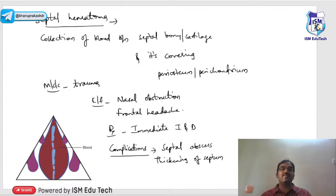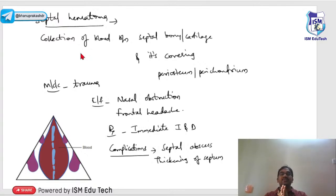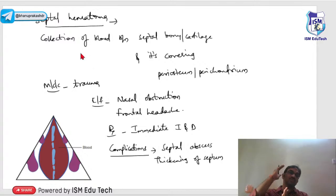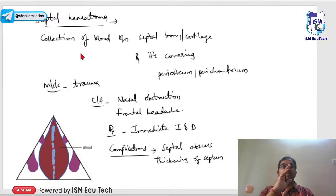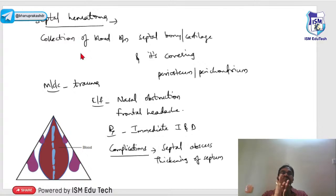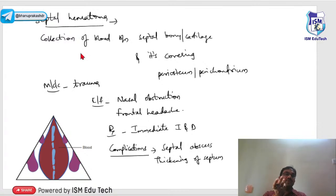Septal hematoma is a collection of blood between the cartilage and its covering perichondrium, or between bone and periosteum, usually due to trauma. Since the perichondrium is tightly attached to the underlying cartilage, even the smallest collection causes severe pain — similar to perichondritis of the ear.